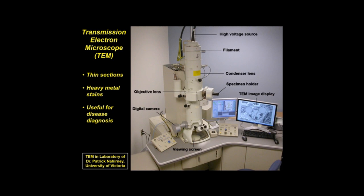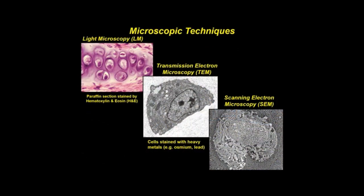Electron microscopy is indispensable for diagnosis of many diseases in which pathological changes are too small to be resolved by light microscopy. Seen here are three comparative views of cells in cartilage, as seen by light microscopy (LM), transmission electron microscopy (TEM), and scanning electron microscopy (SEM). Scanning electron microscopes are used to study surface topography and give three-dimensional images.